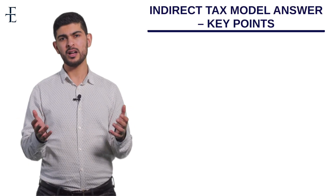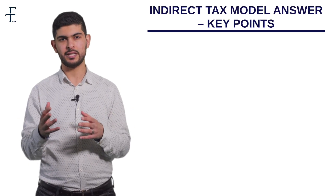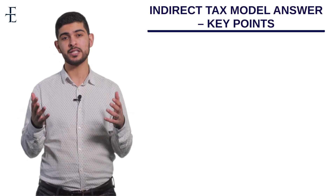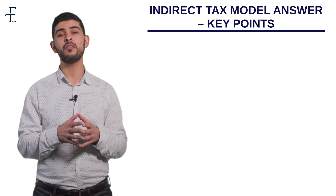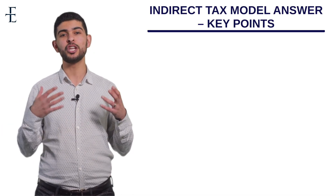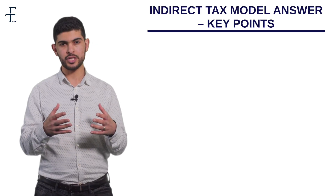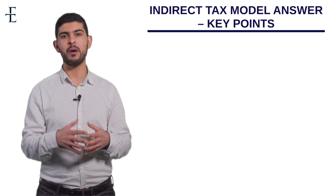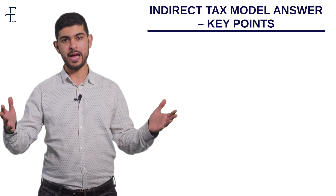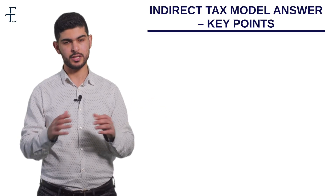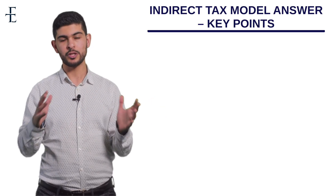Today we're going to deal with a 25-mark tax question. This was actually asked in last year's paper, the June 2017 paper. They asked about the government imposing a sugar tax and what implications that would have on the microeconomy. This is how you lay out an answer on taxation to get really top marks.